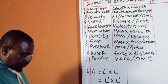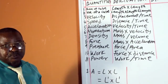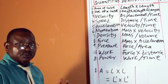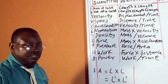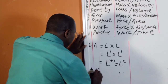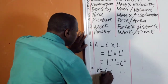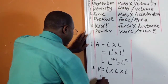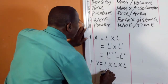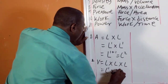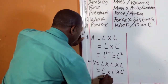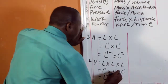Number 2 is volume of a cube. The formula for volume is length times breadth times height. But in a cube, the value of length equals the value of breadth equals the value of height. So volume of a cube is L times L times L, which gives L raised to power 1 plus 1 plus 1, equal to L raised to power 3.